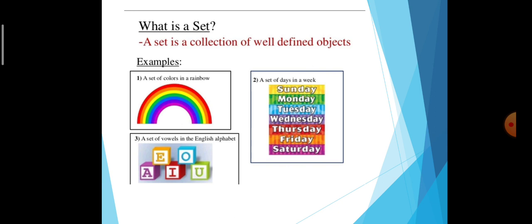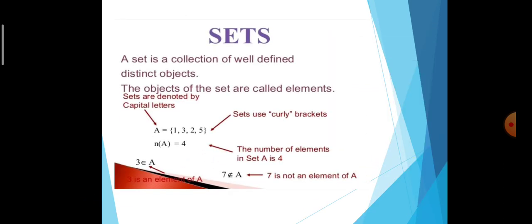So, set means: a set is a collection of well-defined objects. For example, a set of colors of rainbow, a set of vowels in English alphabet, a set of days in a week — these are all well-defined, so they are called sets. A set is a collection of well-defined distinct objects. The objects of the set are called elements. Sets are denoted by capital letters.